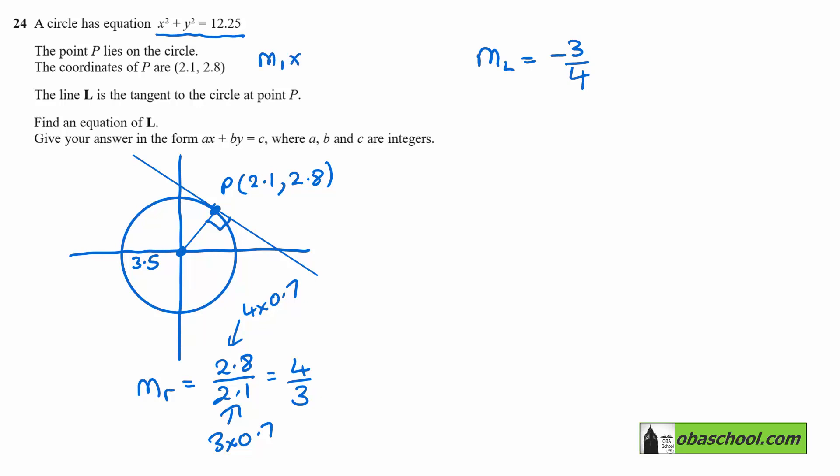This means one gradient is the negative reciprocal of the other. You turn the fraction upside down and change the sign—that's how we get negative three quarters.